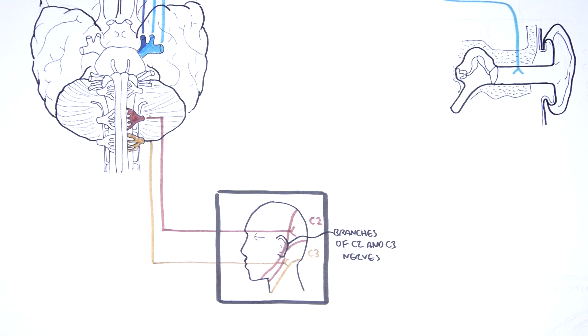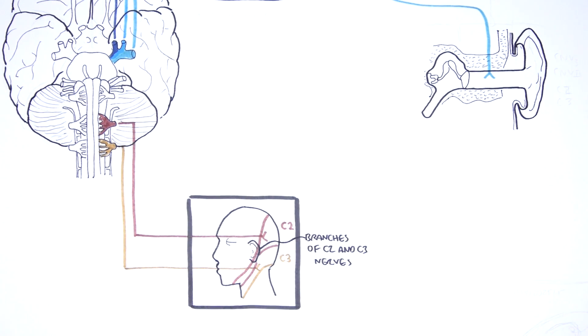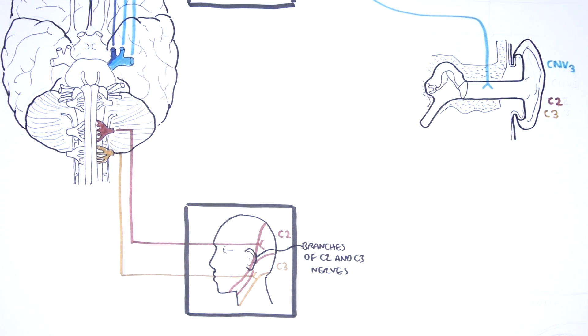So far, the external ear is supplied by cranial nerve number five, branch three, and then also the branches of cervical nerves two and cervical spinal nerve three.